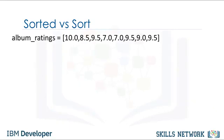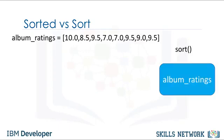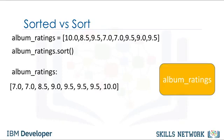If we use the method sort, the list album_ratings will change and no new list will be created. The rectangle in the diagram represents the list album_ratings. When we apply the method sort to the list, the list album_ratings changes. Unlike the previous case, we see that the list album_ratings has changed, and no new list is created.